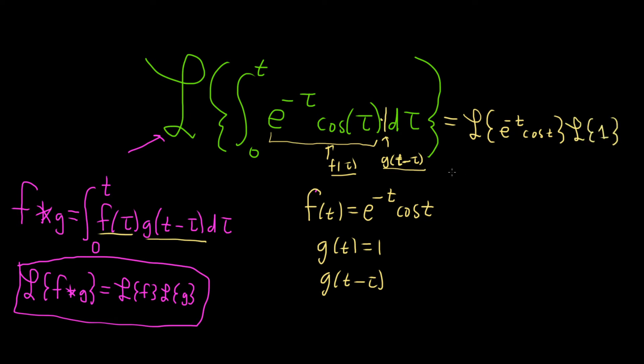So for this first Laplace transform here we're going to use something called the first translation theorem. The first translation theorem says if you're finding the Laplace transform of e to the at times f of t, what you can do is drop the exponential function and replace it with a shift. So this becomes the Laplace of f of t and then you perform a shift. You take s to s minus a.